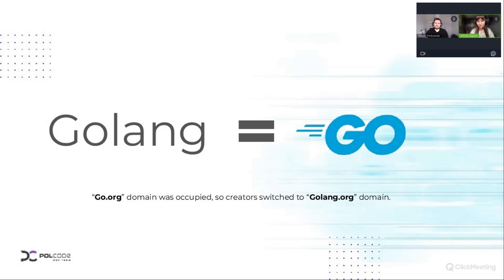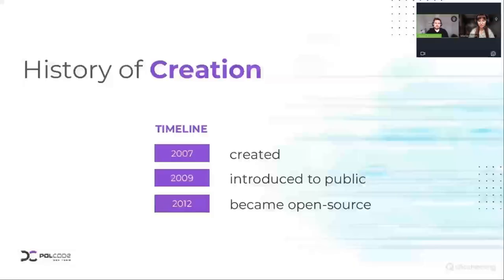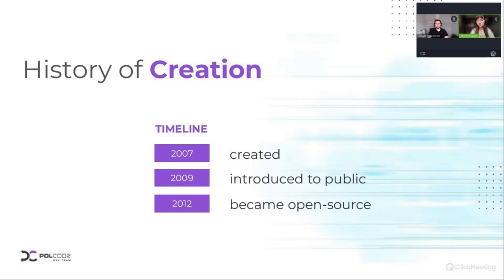It was actually developed in 2007 — two years before it was presented to the public. The creators wanted to develop a language that would combine ease and speed with the efficiency and safety of a compiled language. We won't go into too much detail about Golang's history here, but our viewers can also refer to a recent article that you published on Polcode's web page. That's right — in my article, 'Efficiency Meets Flexibility,' I share many more tips on Go besides history. It gives you an overview of Golang in a nutshell.